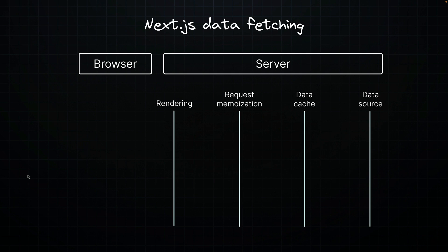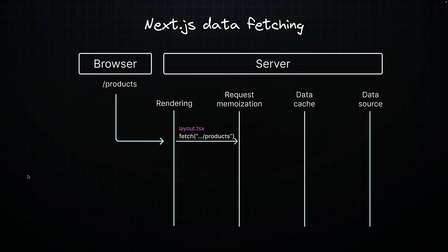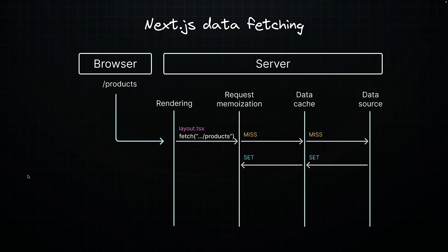Here is a visualization to help you understand better. Let's also incorporate data caching into the visualization to grasp the bigger picture. When you navigate to /products in the browser, the layout component initiates a fetch request. It checks in-memory to see if a request with the same URL and options has already been made. Finding none, it then checks the data cache, which also shows no result. It then fetches the data from the JSON server, stores the result in the data cache and in-memory, and returns it to the layout component.